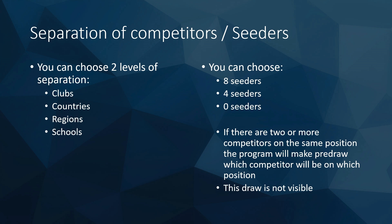It can happen that you have two or even three competitors tied at the same seeding position, such as seeder six or even seeder one. The program will make a pre-draw between all of them to determine their position. If you have more competitors than seeder spots, the draw will pre-select who takes the seeded place and the others will be randomly placed. This is done automatically and not visible.